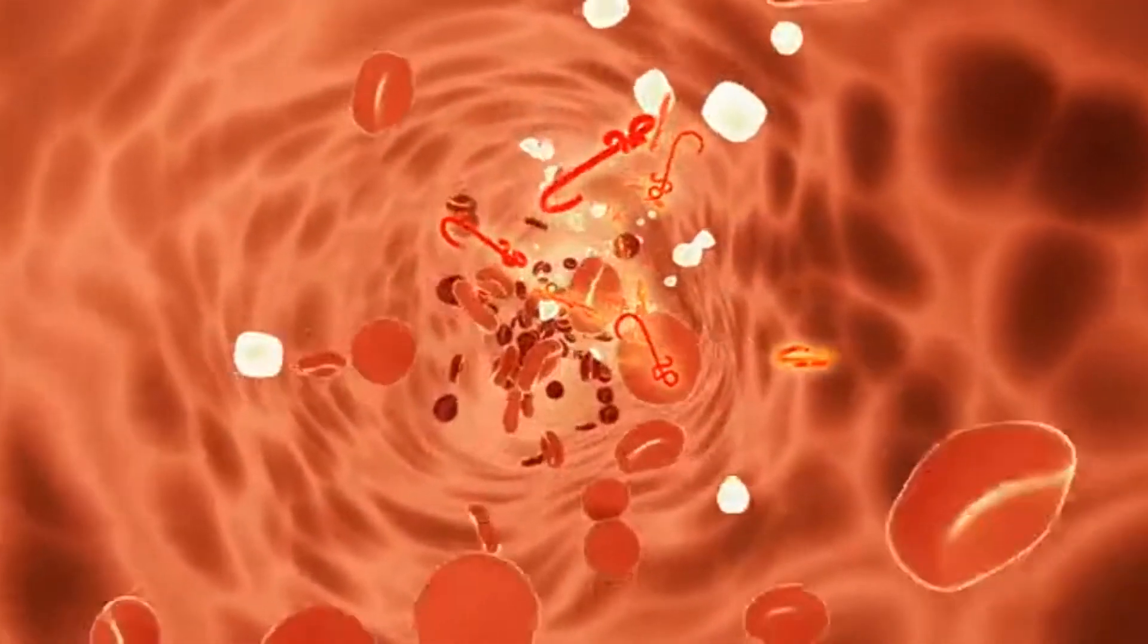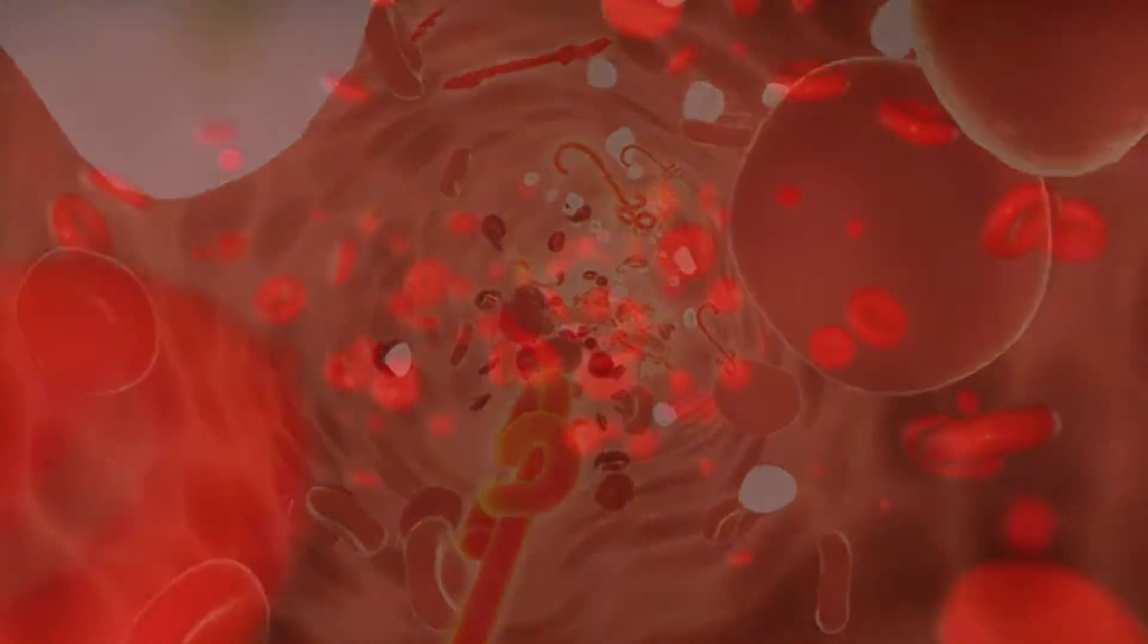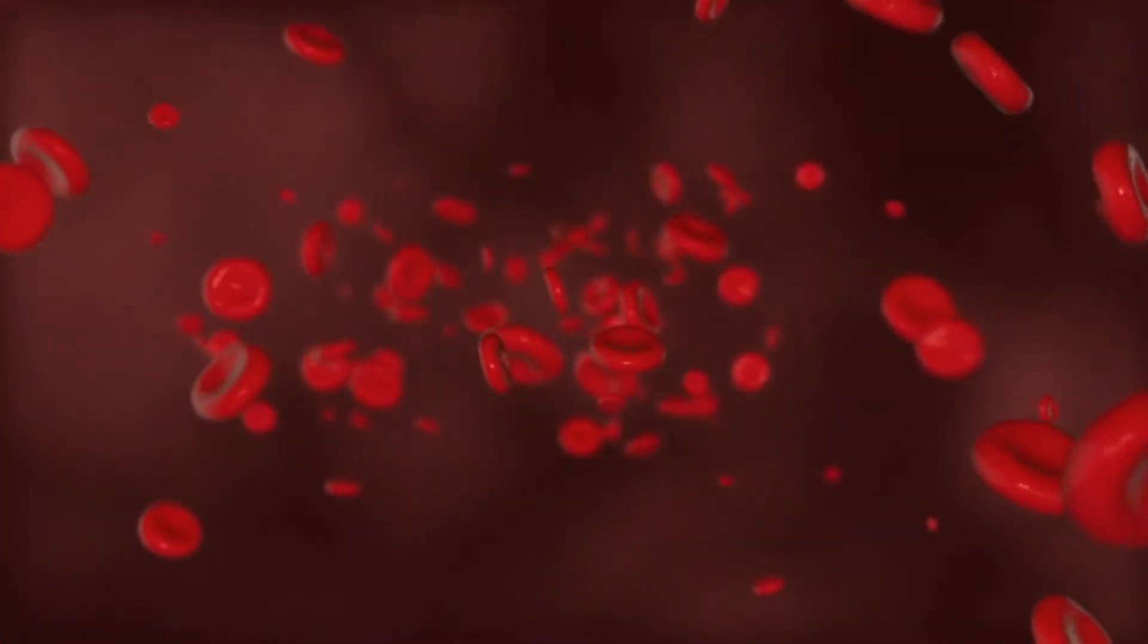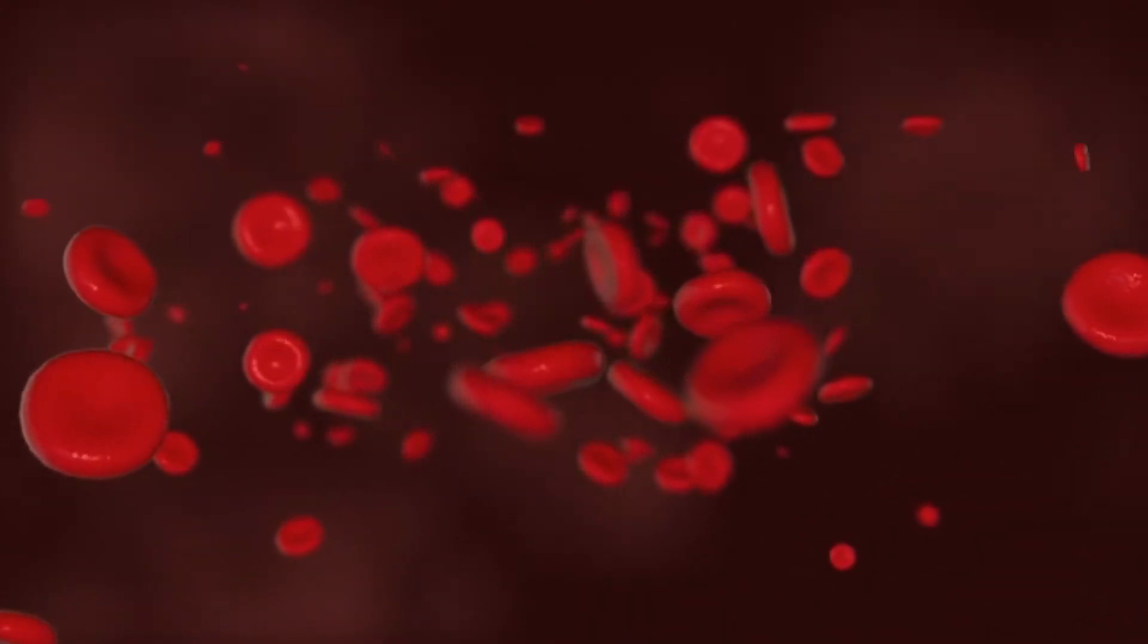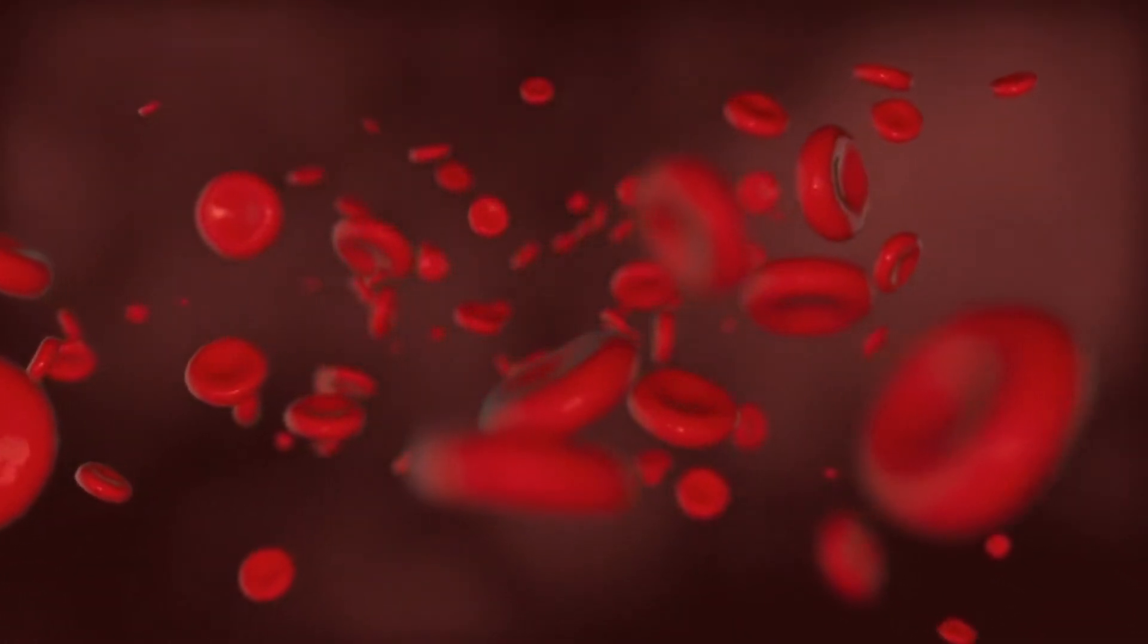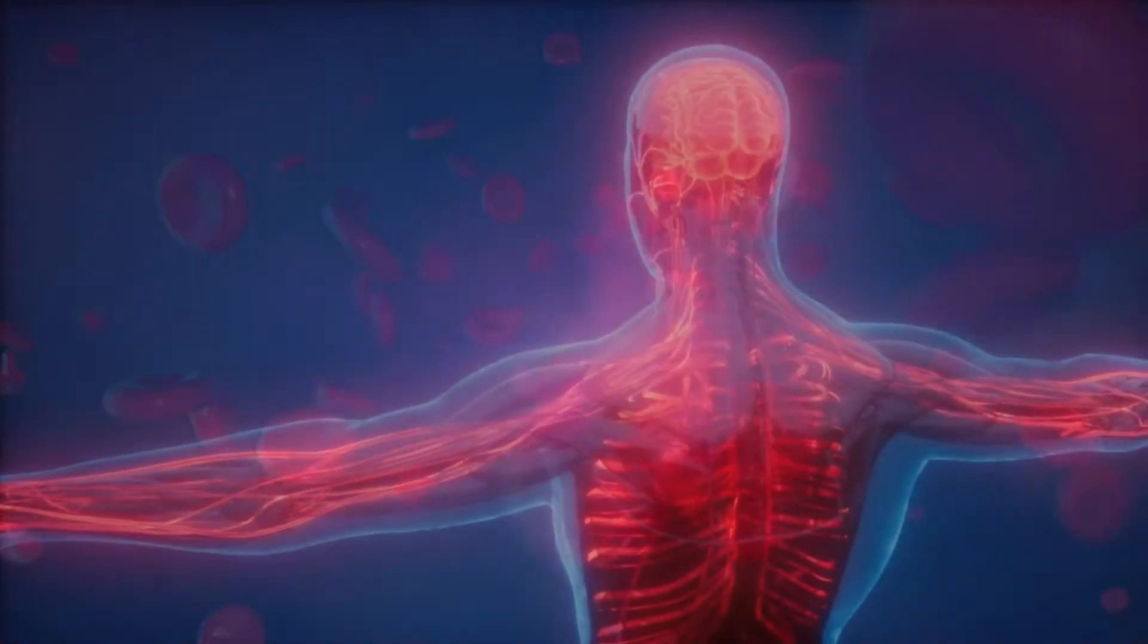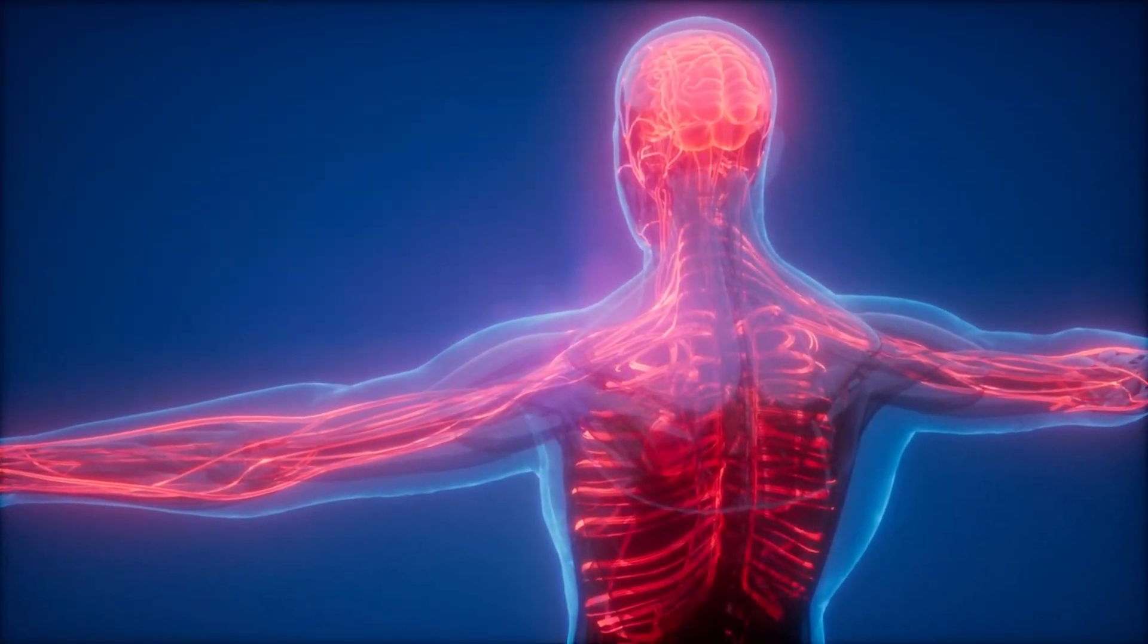Arteries carry blood rich in oxygen from the heart to the body. They have thick muscular walls. The main artery in the human body is called the aorta. It comes out of the heart and divides into smaller vessels to form a network in the body.